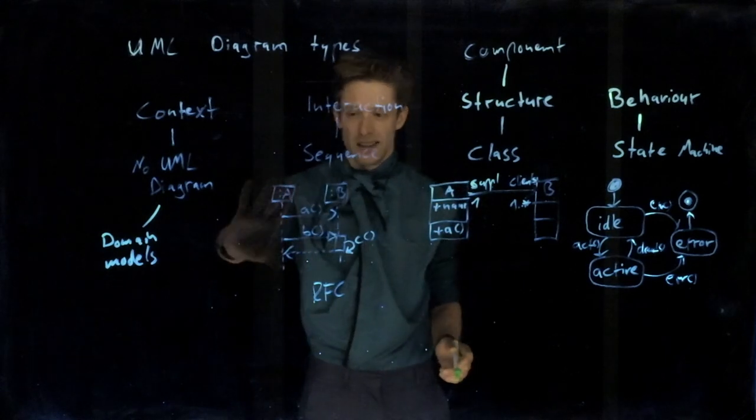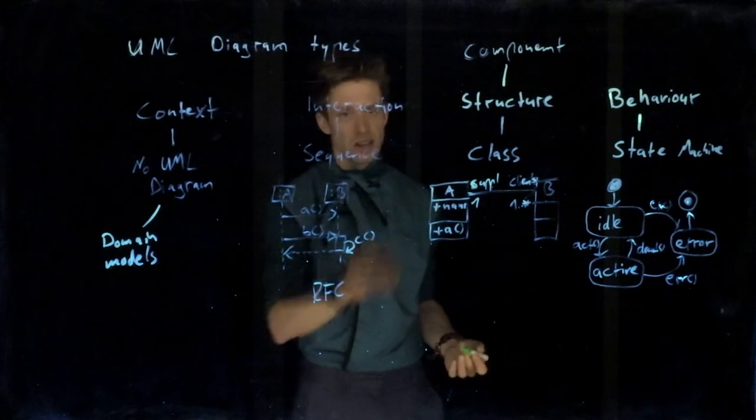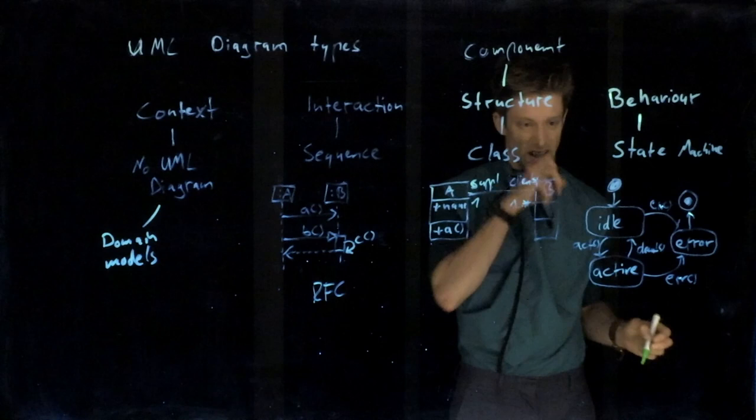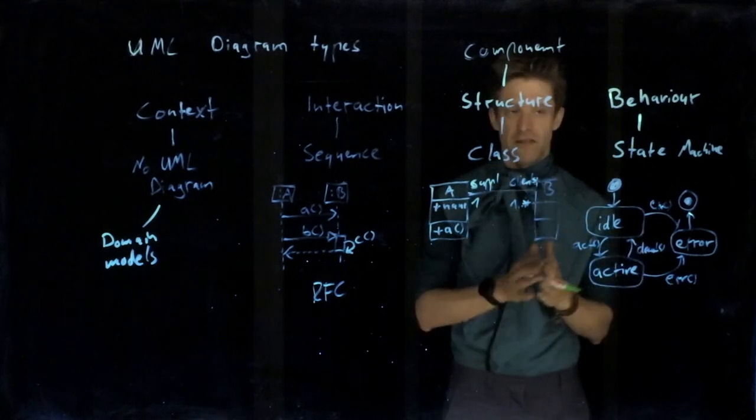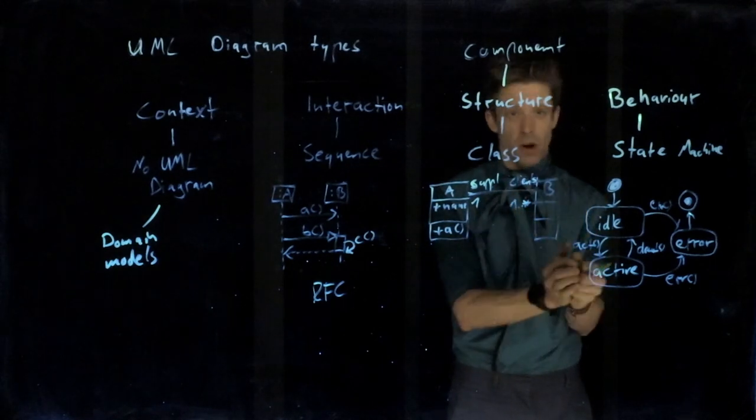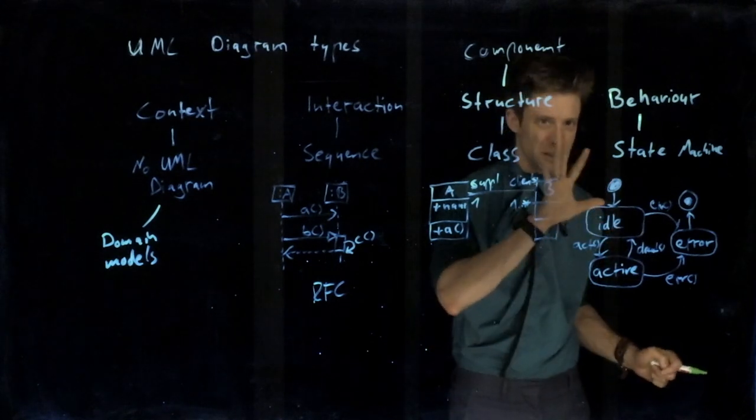For example, our instance A here could have this behavior internally, but then it communicates with something else in a different way. These things are very useful to describe the state of something, the behavior of something. Very common in a lot of embedded systems that you describe how does one component work. This is extremely important.